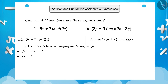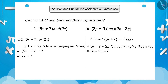5x plus 7 minus 2x. Here, 5x and 2x are like terms, so we will rearrange these two terms as (5x minus 2x) plus 7. Since 7 is the unlike term, it cannot be subtracted. Therefore, by subtracting the like terms, we will get 3x plus 7.